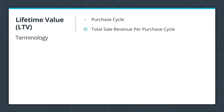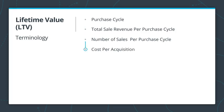Total sale revenue per cycle is the revenue earned from all customers per purchase cycle. Number of sales per purchase cycle is the number of times your average customer buys during the purchase cycle. Cost per acquisition — you've seen this before — is the total cost of marketing and sales divided by the number of new leads. Feel free to pause the video or rewind and review what I've covered thus far.